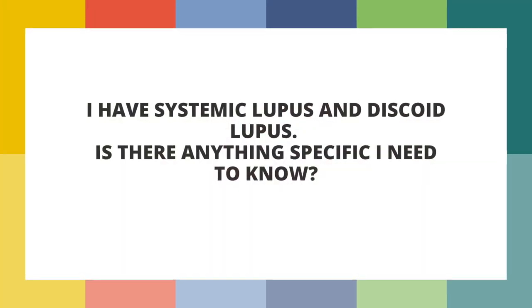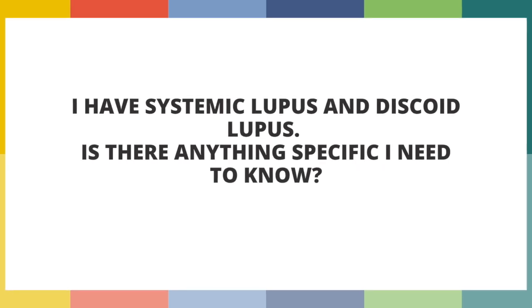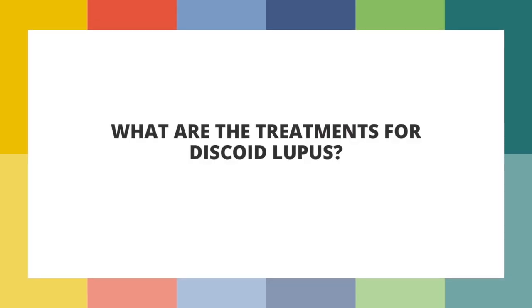If you have systemic lupus and now also have discoid lupus, protecting yourself from UV light just got even more important. As I've mentioned in other lupus videos, protecting against UV light is critical for preventing lupus flares, and the same is true for discoid lesions. It appears UV light may play a role in the pathogenesis of these lesions, so you want to be extra careful with your SPF, protective clothing, and staying out of UV light.